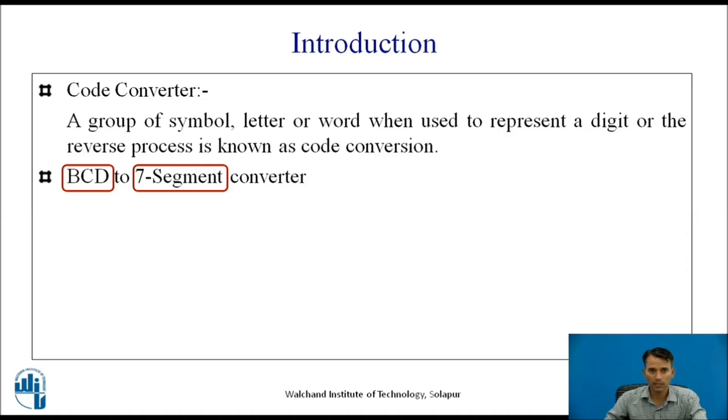In case of 7-segment display, it is a combination of 7 light emitting diodes arranged in such a way that it will display 0 to 9 decimal numbers. Along with that, it can also display A to F letters. 7-segment displays are of two types: common anode 7-segment display and common cathode 7-segment display.